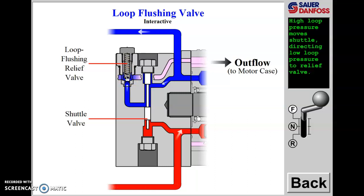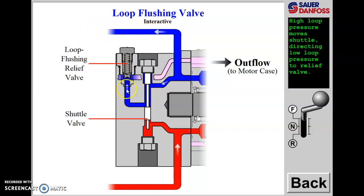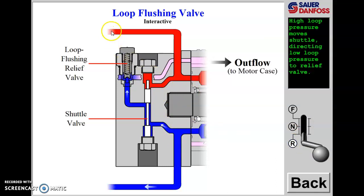The return oil goes to the loop flushing relief, which is set 10 or 20 PSI lower than the charge relief at the pump. This starts to control charge pressure, because the return oil on this side of the loop is where we're adding charge flow via the charge check valves. Oil takes the path of least resistance, so charge pressure drops to the value of this loop flushing relief. Some manufacturers — John Deere specifically — call this an operating charge relief because it controls charge pressure in forward.